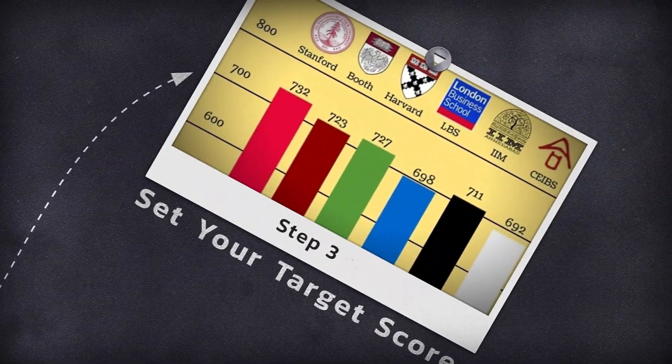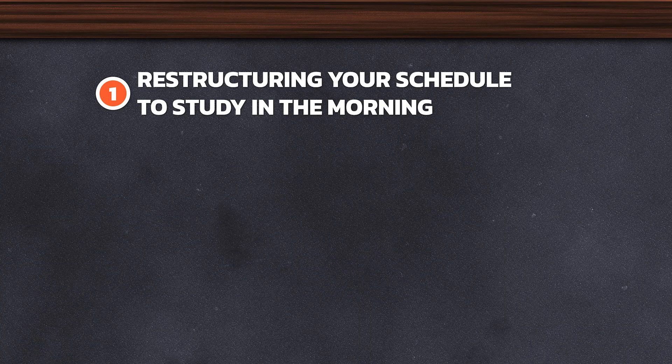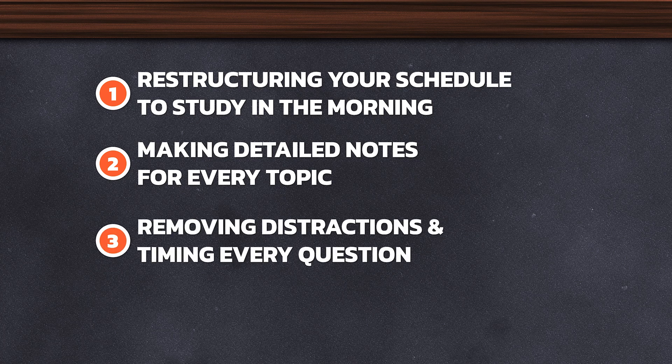Step 3: Set your target score. You've got your starting point — now, what's your final destination? How much do you want to improve? Use this as a guide to set a realistic target. If you're starting at a 455 and aiming for a 755, you might be setting yourself up for disappointment. But it is possible to improve more than 150 points — you just have to study harder than 90% of all other people, which means restructuring your schedule to study early in the morning, making detailed notes for every topic, removing distractions and timing every question, and constantly reviewing your mistakes. Improvement is not about how much time you spend, but how much you're able to learn and apply. If you're not feeling that you're learning material, stop and find another way to learn that works for you.